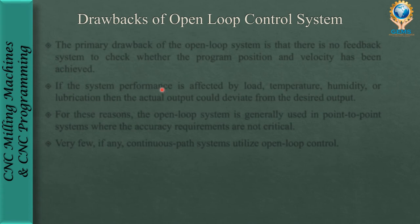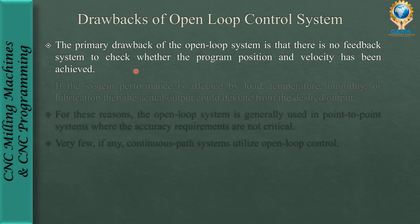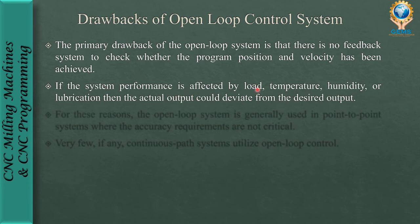The primary drawback of the open loop control system is that there is no feedback system to check whether the programmed position and velocity have been achieved. We cannot validate whether the desired accurate output was obtained. If system performance is affected by load, temperature, humidity, or lubrication, the actual output could deviate from the desired output and that difference cannot be detected.